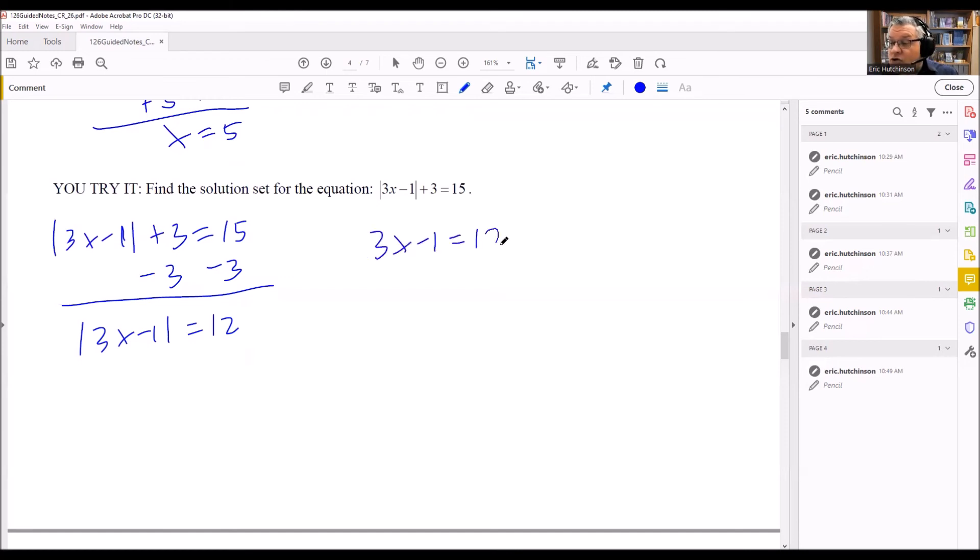3x minus 1 equals 12. 3x minus 1 equals negative 12. So we do one positive and one negative. We couldn't do that with the 0 because negative 0 is just 0. That's why the previous example only had one solution. But this one's going to have two solutions. Add 1 to both sides. 3x equals 13. We get x equals 13 thirds.